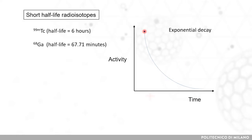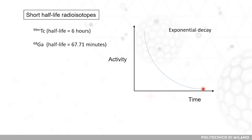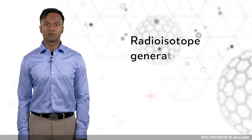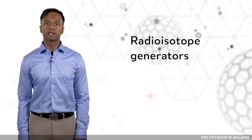Sometimes the radioisotope of interest has a half-life that is too short to be directly produced in the nuclear facility. However, the parent radioisotopes produced by reactor or accelerator can be used in chemical separation devices where they decay into daughter radioisotopes of interest. Within such devices, called generators, the desired radioisotope is produced directly at the hospital.